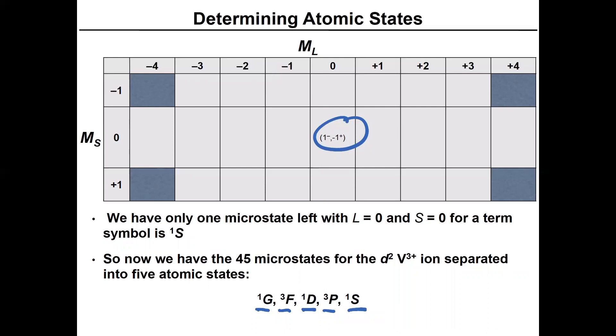If you put this all together, we had singlet G, triplet F, singlet D, triplet P, singlet S. And it's that simple. Those are the 45 microstates that are possible. Because G ran from plus four to minus four, that had a degeneracy of nine. F went from three to minus three. So there's seven ML values, but there's a spin triplet. So there's 21 possible degenerate microstates for the triplet F manifold. Singlet D has a degeneracy of five. Triplet P has a degeneracy of nine. And singlet S has a degeneracy of one. If you add them all up, you'll see that gives you the 45 microstates for the free ion term of a D2 electronic configuration.